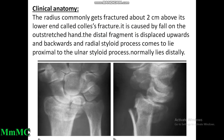Clinical anatomy: the radius commonly fractures about two centimeters above its lower end — called Colles' fracture. It is caused by fall on the outstretched hand. The distal fragment is displaced upwards and backwards, and the radial styloid process comes to lie proximal to the ulnar styloid process (normally it lies distally).